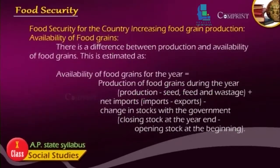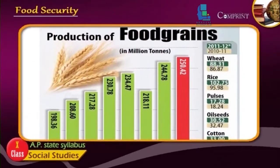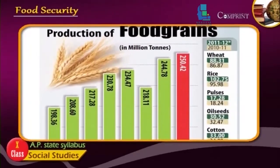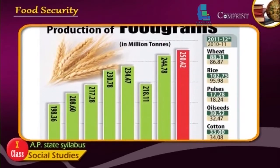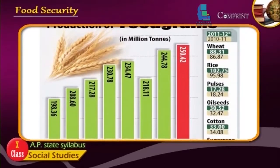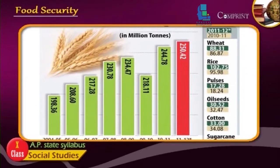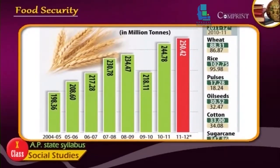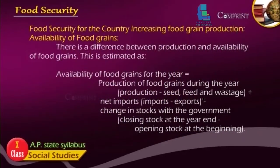There is a difference between production and availability of food grains. Availability of food grains for the year is estimated as: production of food grains during the year, minus seed, feed, and wastage, plus net imports (imports minus exports), minus change in stocks with the government — that is, closing stock at year end minus opening stock at the beginning.